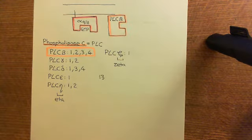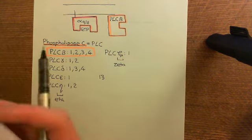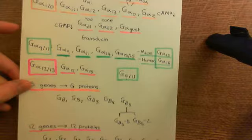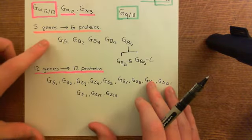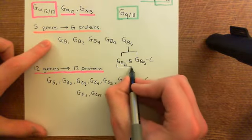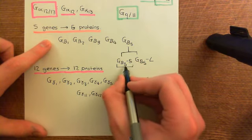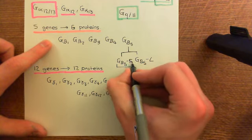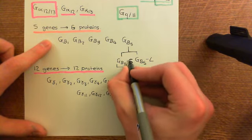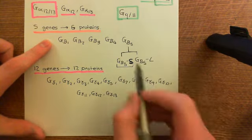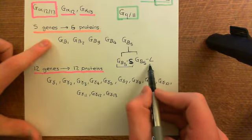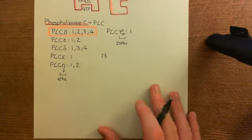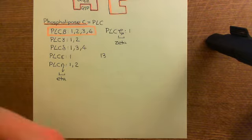This reminds me of a correction I meant to make regarding the beta subunits of heterotrimeric G-proteins: what I called G-beta 5-5 is actually G-beta 5S — that's an S for small, not the number five again. So the small and the large splice variants of G-beta 5. That's just a minor correction.